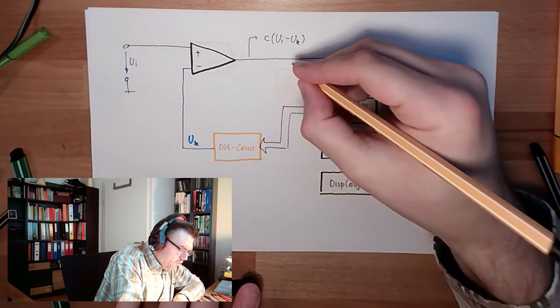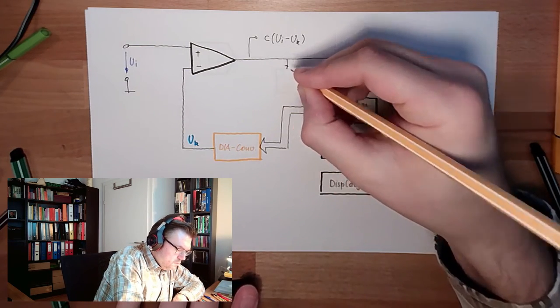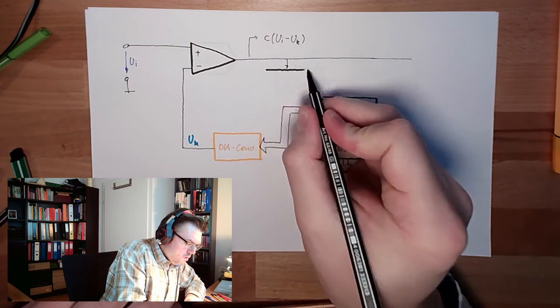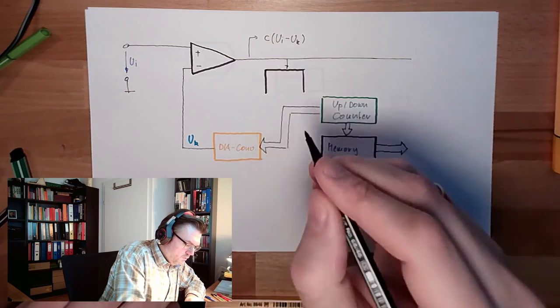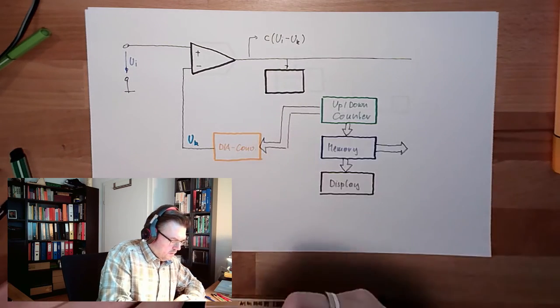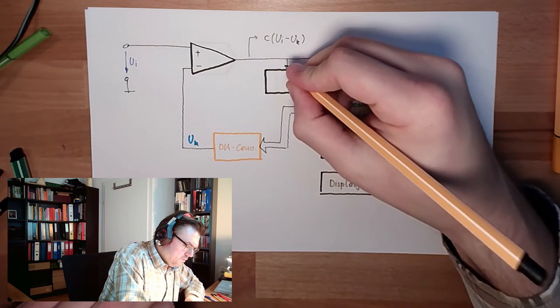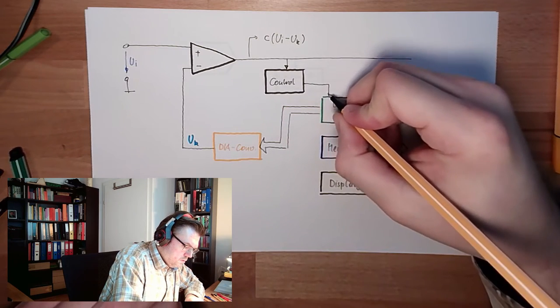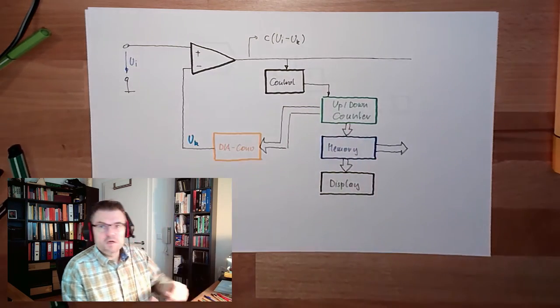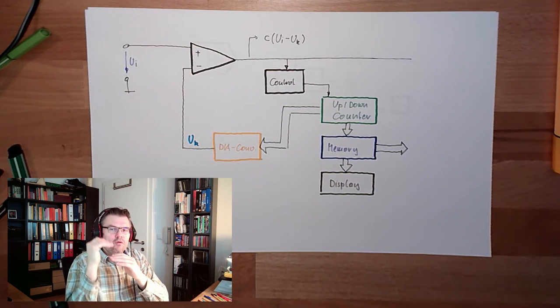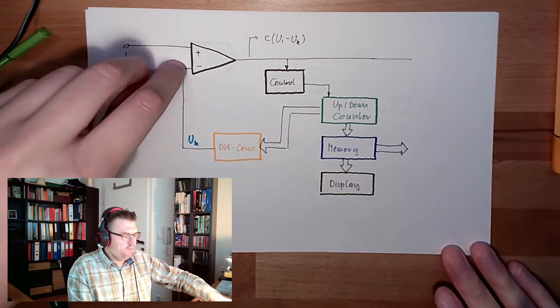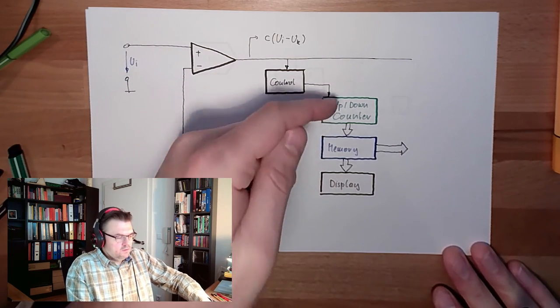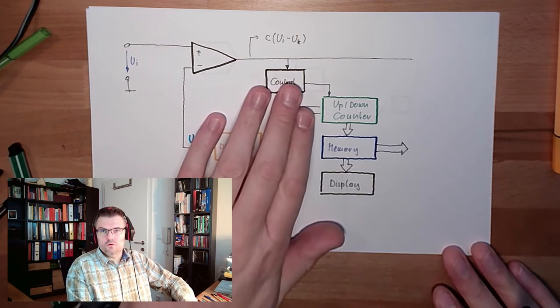Here we have a control logic. This control logic is looking if this difference here, if this voltage is small. If it's below a certain threshold, because we are very close to the input, then it will lead to the memory. This is what this control logic is doing.